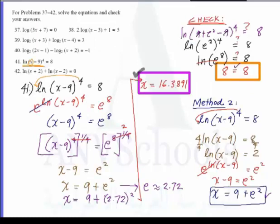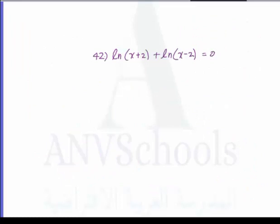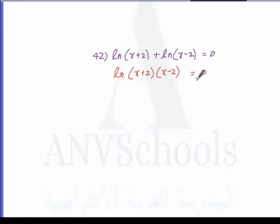Last, we have number 42: ln of x plus 2 plus ln of x minus 2 equals 0. Using the product rule, we combine the two logarithms: ln of the product x plus 2 times x minus 2 equals 0.